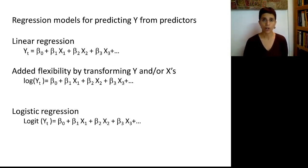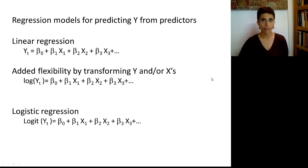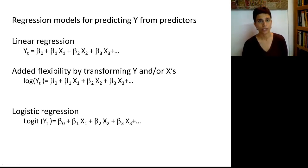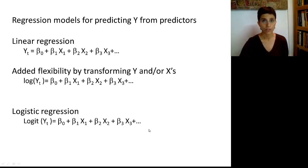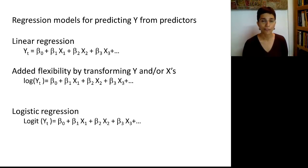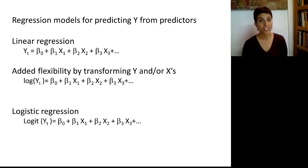For example, we talked about the log transform, where we take the logarithm of the outcome on the left-hand side. When we talked about classification or a binary outcome, we used logistic regression. Similar to linear regression, we were able to write out an equation that shows the relationship between the outcome and the inputs. The difference was that we were looking at a non-linear function of the outcome, which is called the logit. We're actually going to see this logit come into play in neural nets as well.